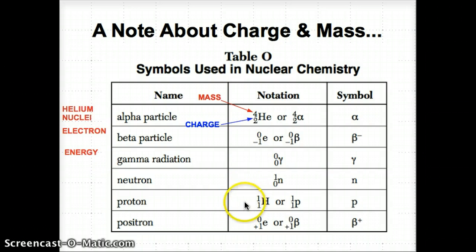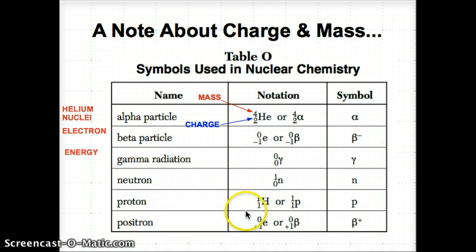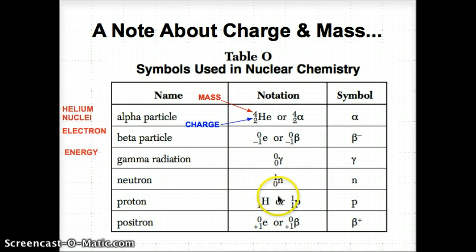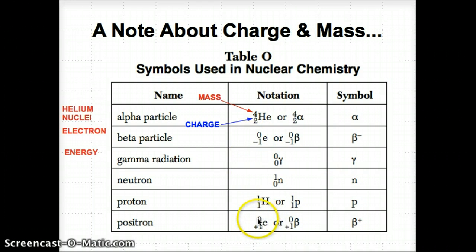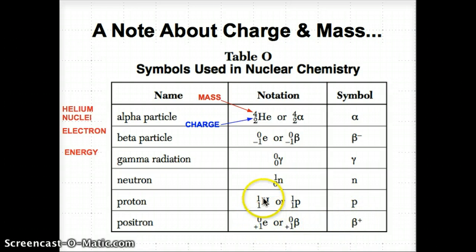Neutrons have no charge — their charge is 0 — and their mass is 1 AMU; N stands for neutron. For the proton, the charge is positive 1, opposite of negative 1 for the electron, and its mass is also 1 AMU. This is the same as a hydrogen-1 nucleus, noted by P for proton. Finally, a positron is the opposite of a beta particle — it has a mass of 0 AMU and a charge of positive 1, unlike a proton which has a mass of 1 AMU.